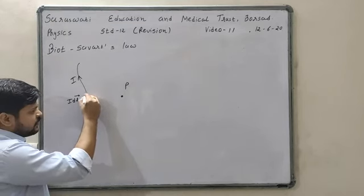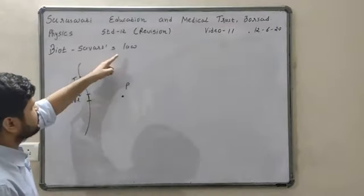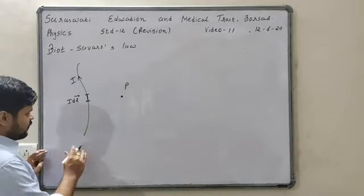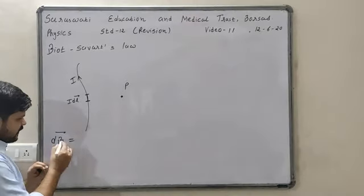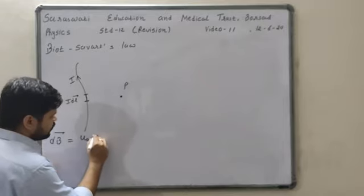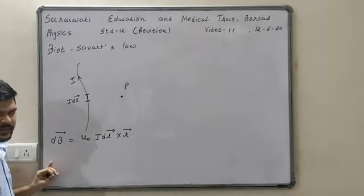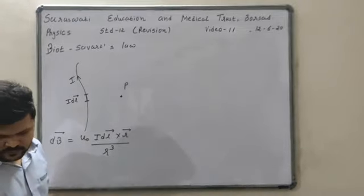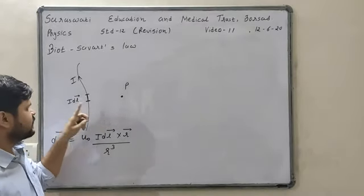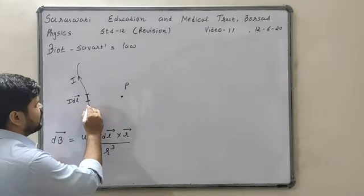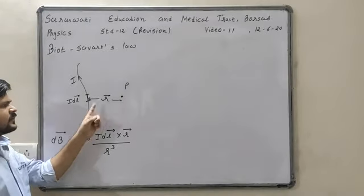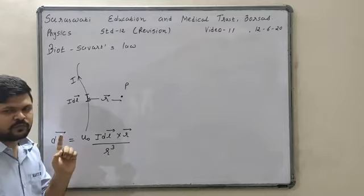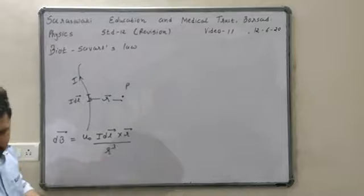Due to this small element we will find out the magnetic field at point P. Biot-Savart law suggested that if from the wire current I is flowing and we want to find out the magnetic field at point P, then this magnetic field is given by: dB = μ₀ I DL cross R upon R cube.